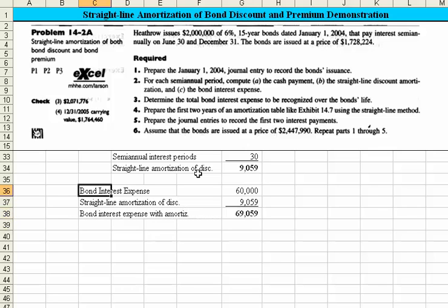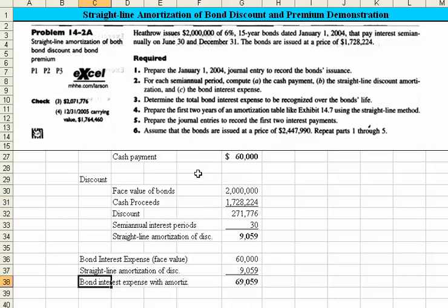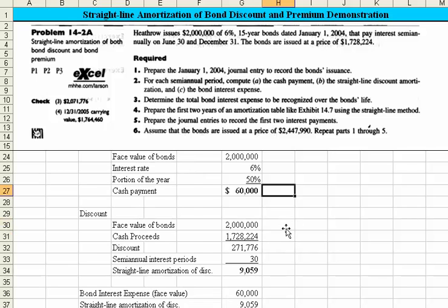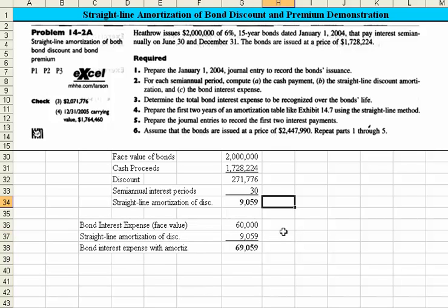To label this: bond interest expense at face value. So our answer to Part 2: the cash payment is $60,000, the discount amortization is $9,059, and the bond interest expense with amortization is $69,059. That takes care of Parts 1 and 2 of problem 14-2A.